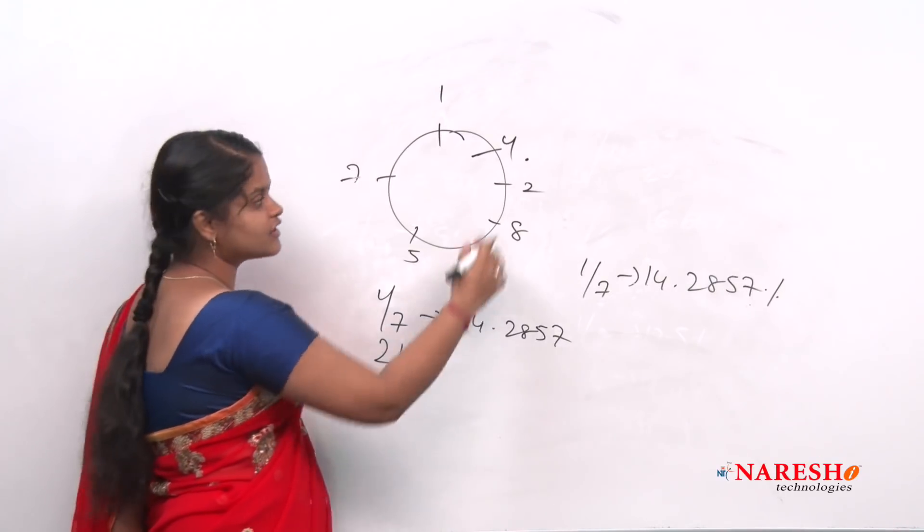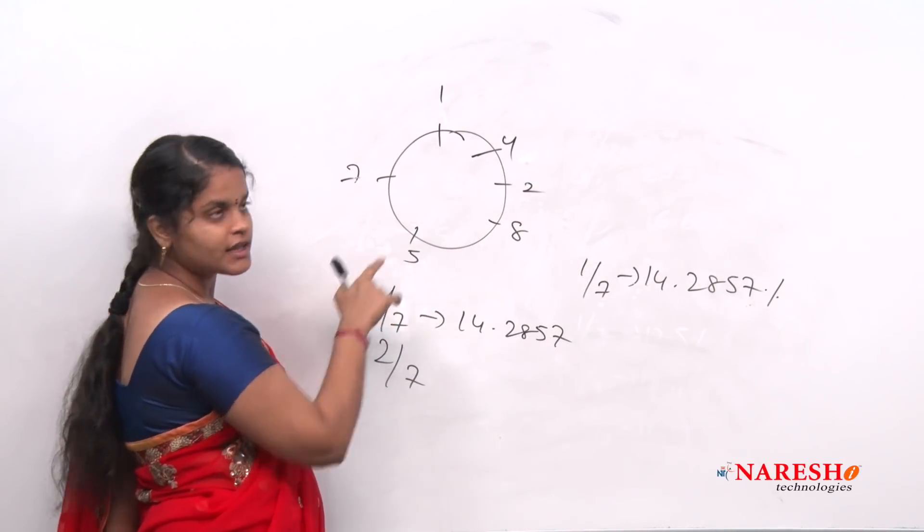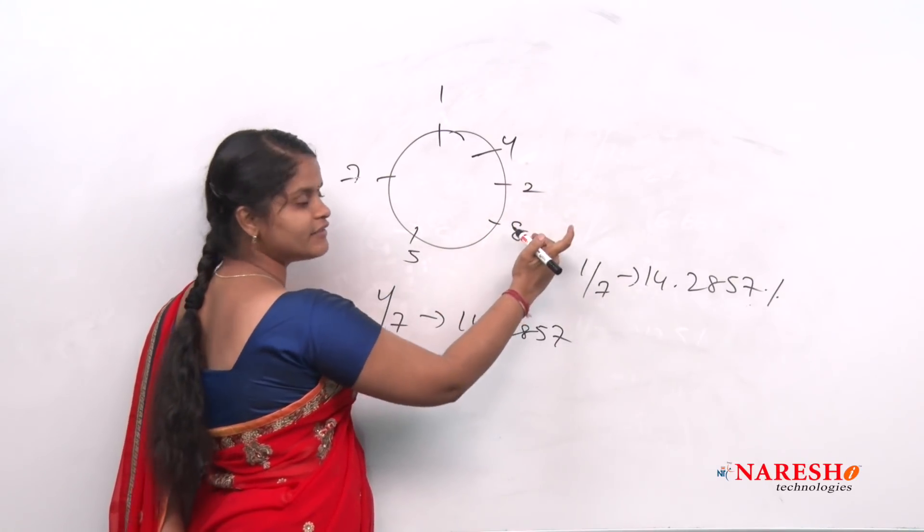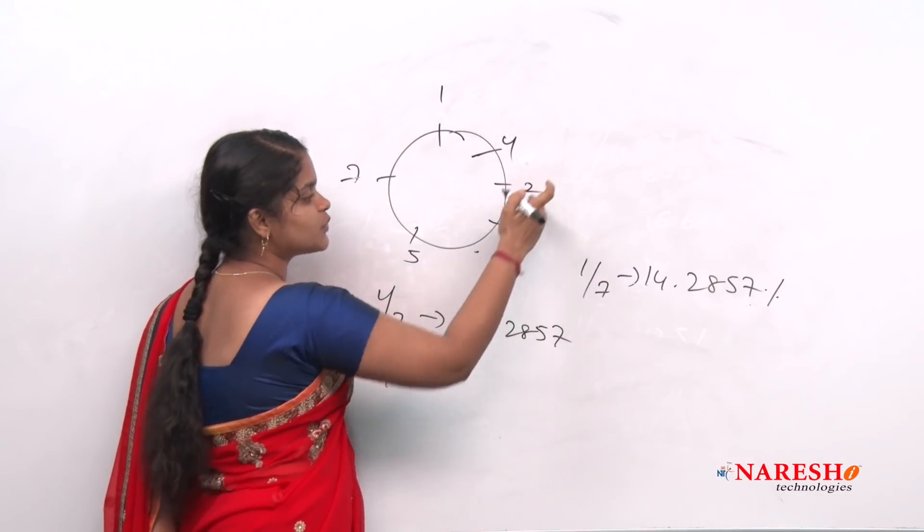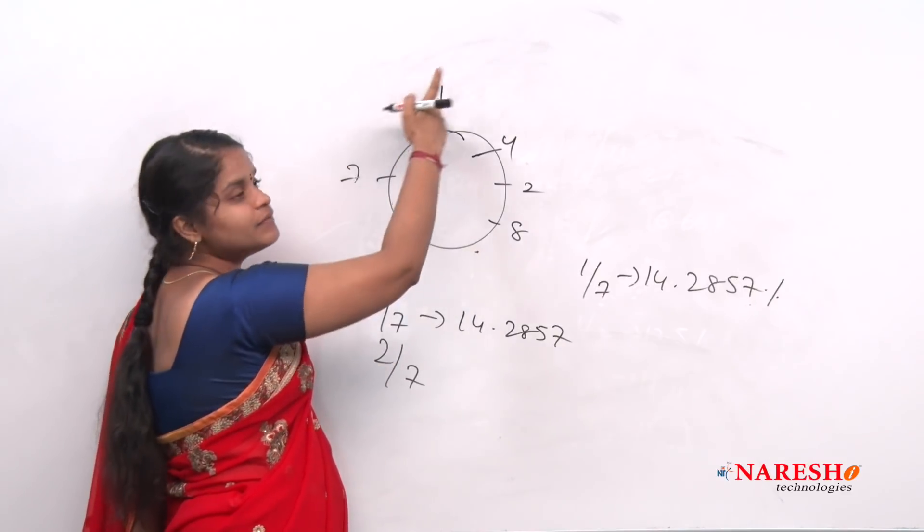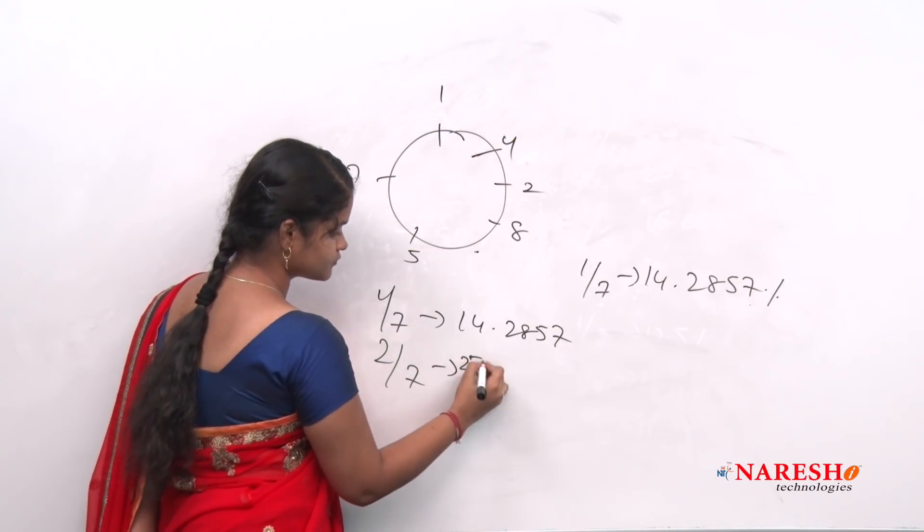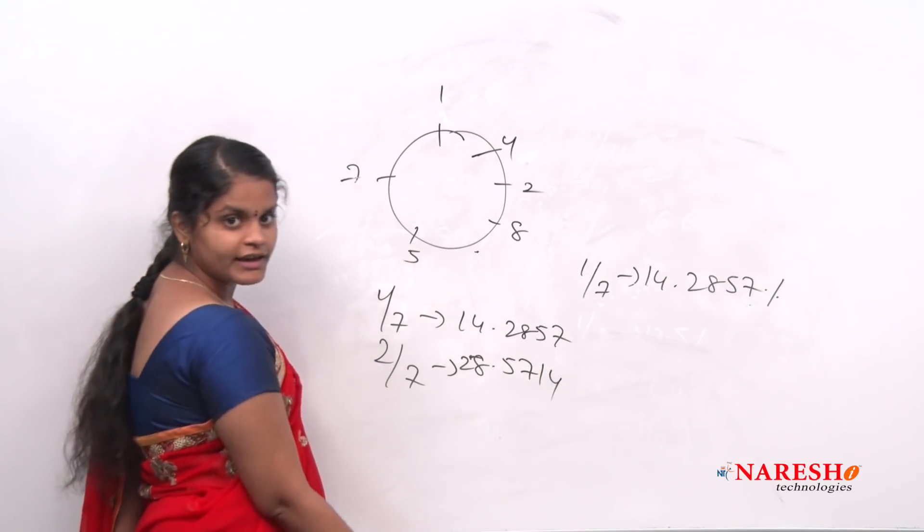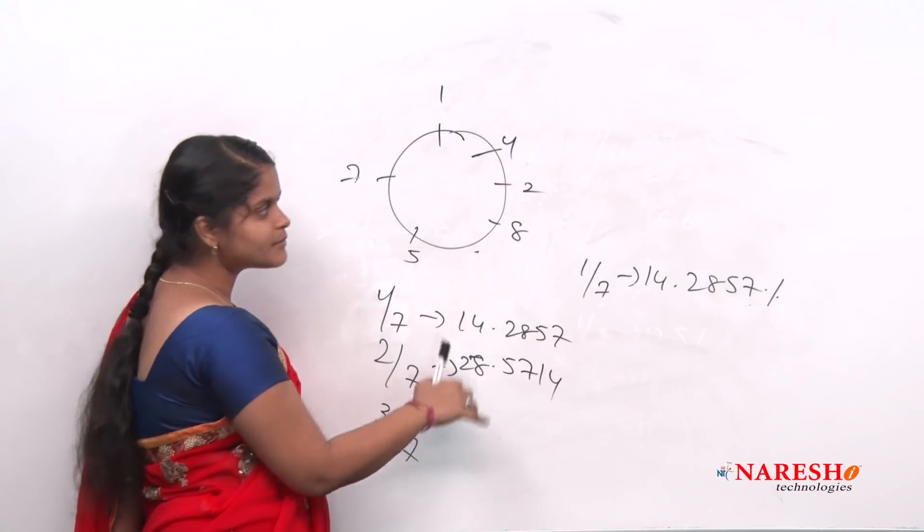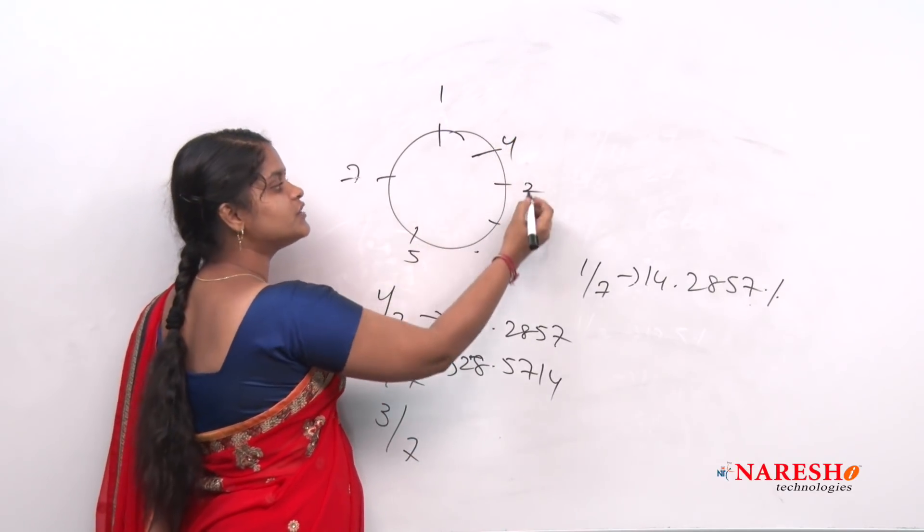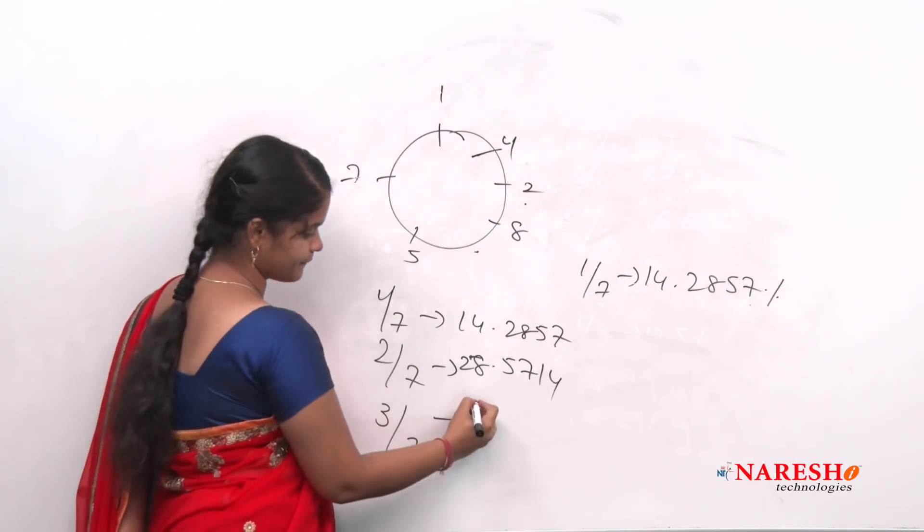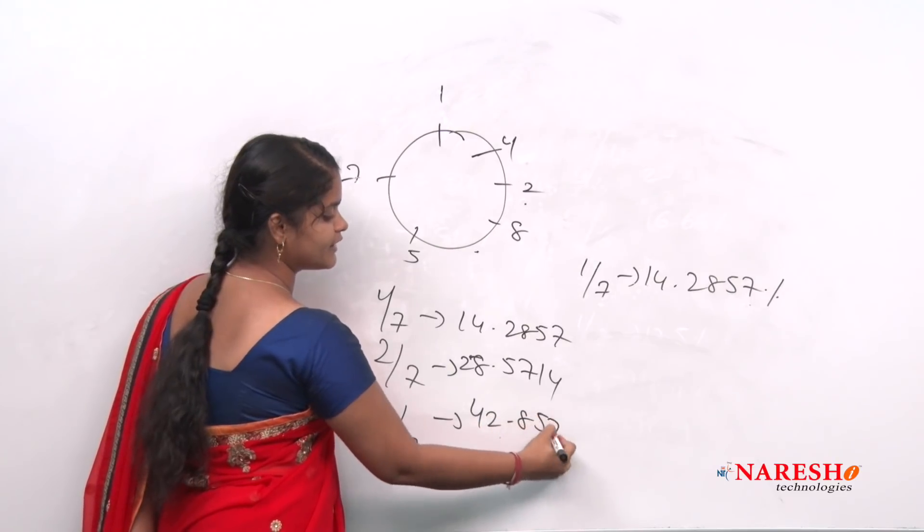If I want to find 2/7, what is the next least number in this? After 1, what is the next least number? 2. So with 2, leave 2 numbers. Means I will leave 2 and I will leave 2.8. So it will be 28. Again up to 2 I should write. 28.5714. If I want to find 3/7, 1 is done, 2 is done. Then what is the next least number? 4. So with 4, 2 numbers. So it will be 42.8571.